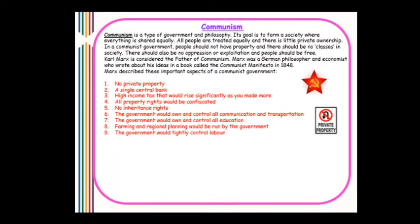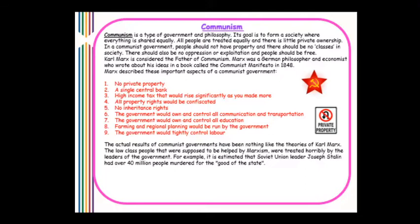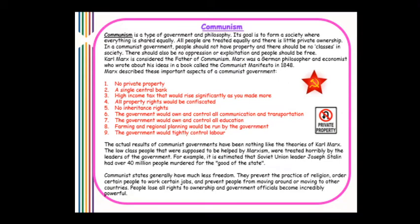Farming and regional planning would also be run by the government, with tight control over labour. However, the actual results of communist governments have been nothing like Marx's theories. The lower-class people that Marxism was supposed to help were often treated horribly by Soviet leaders. For example, Soviet Union leader Joseph Stalin is estimated to have had over 40 million people murdered for the good of the state. Communist states generally have much less freedom, prevent the practice of religion, restrict people's jobs and movement, and government officials become incredibly powerful.